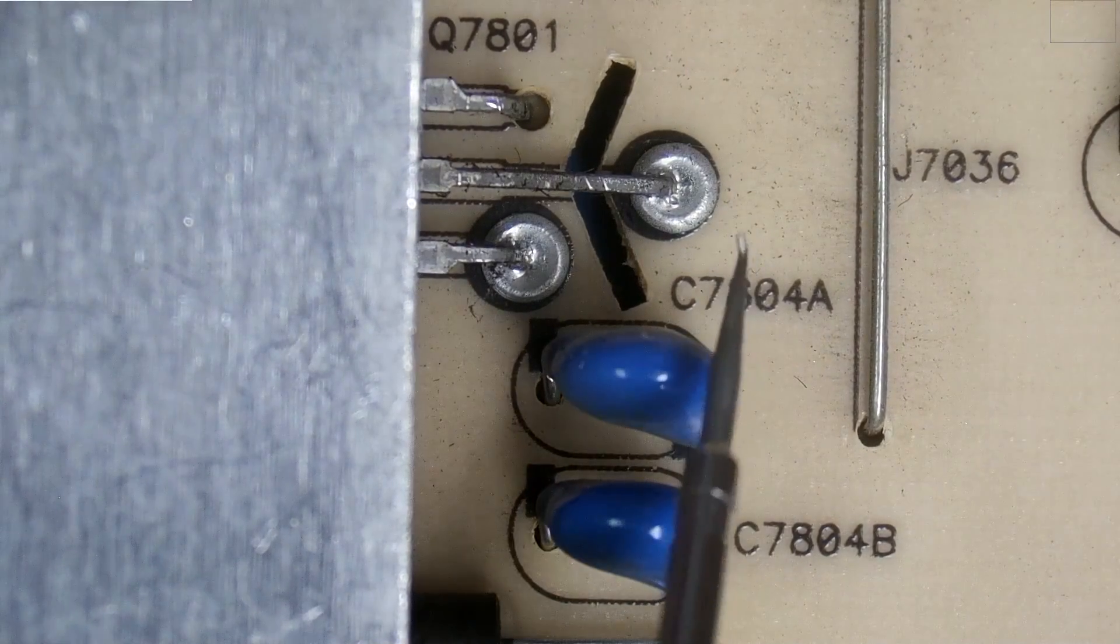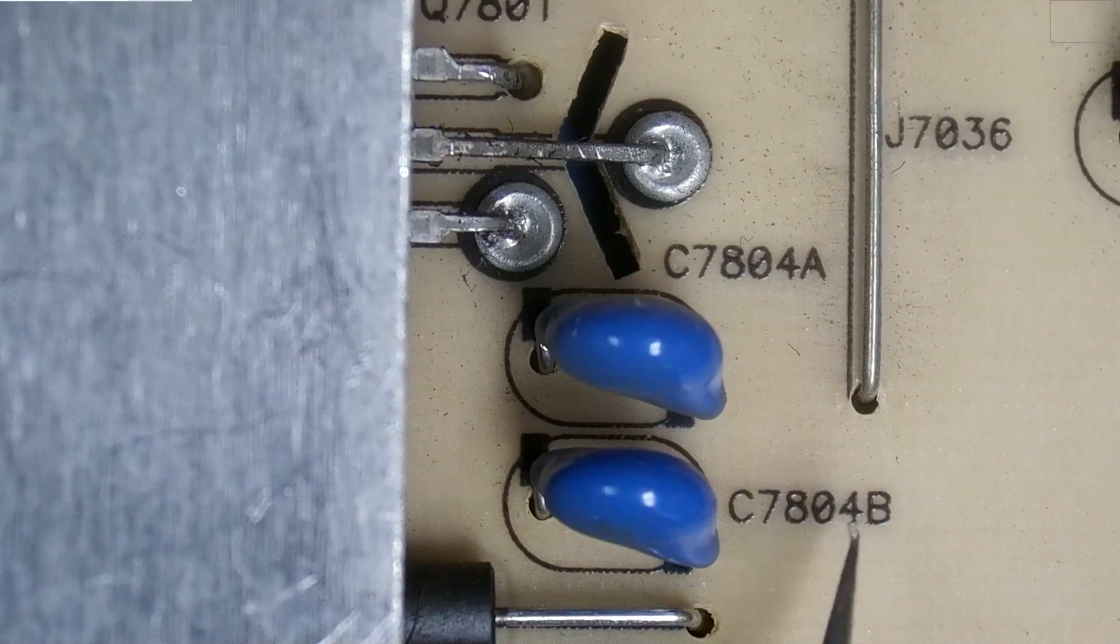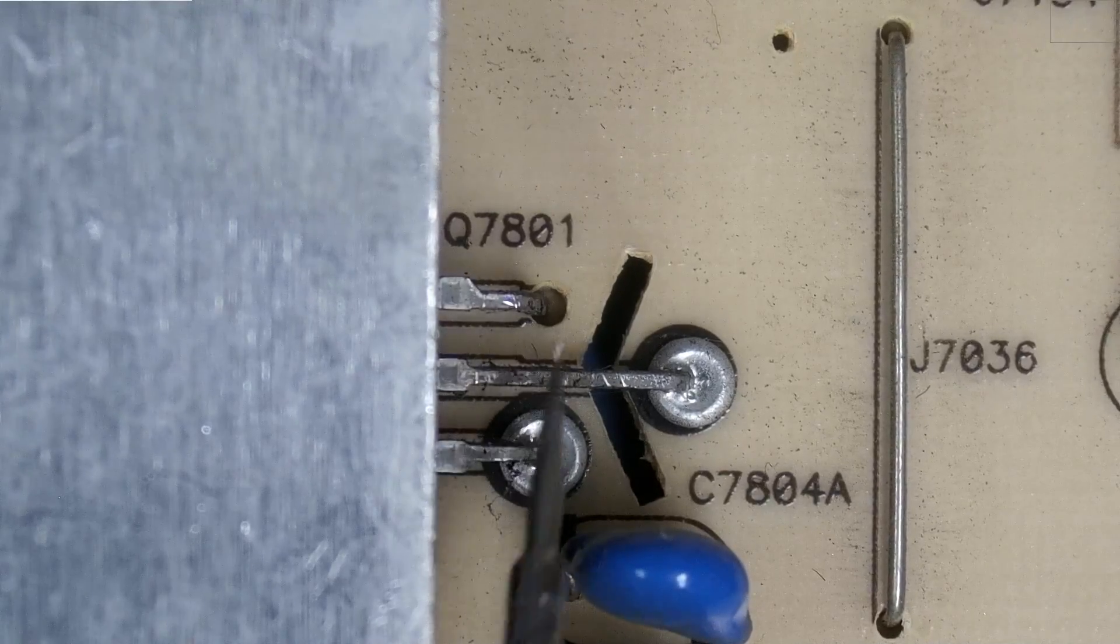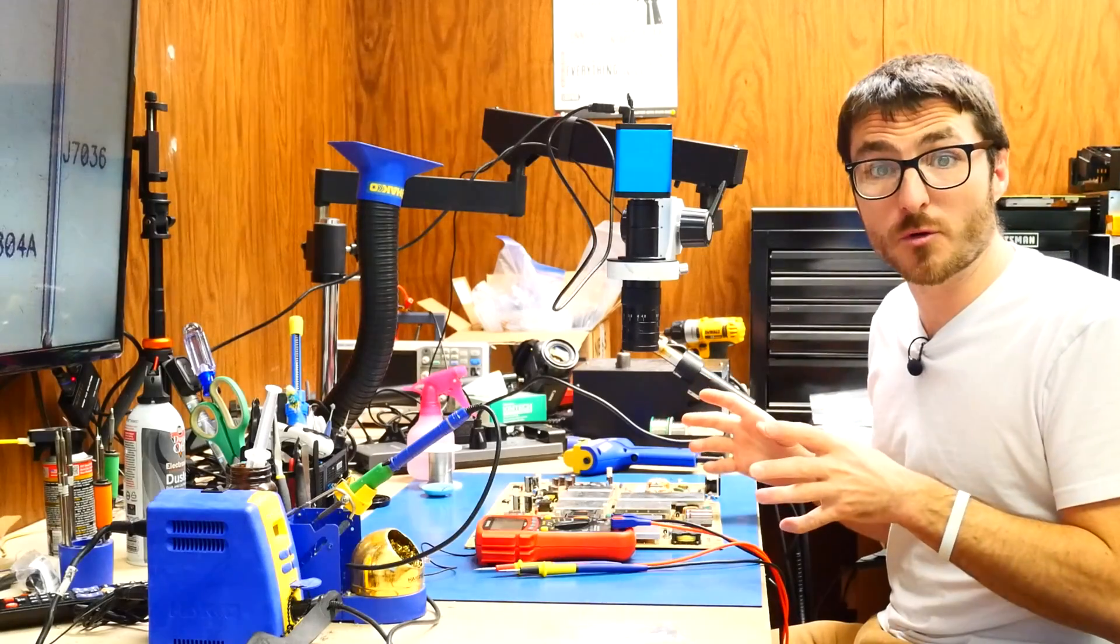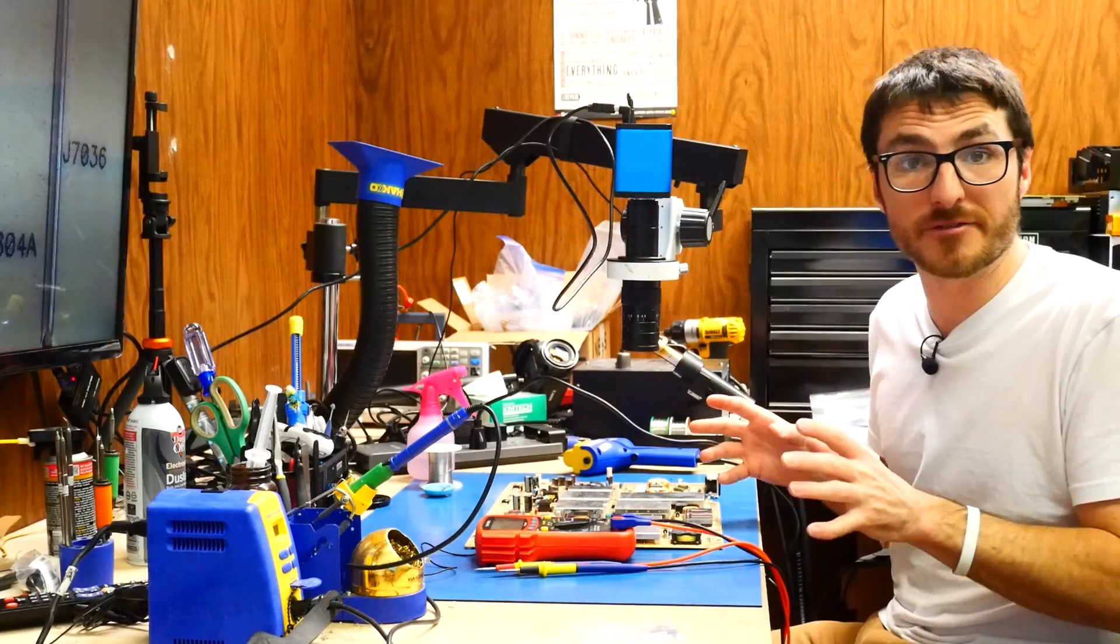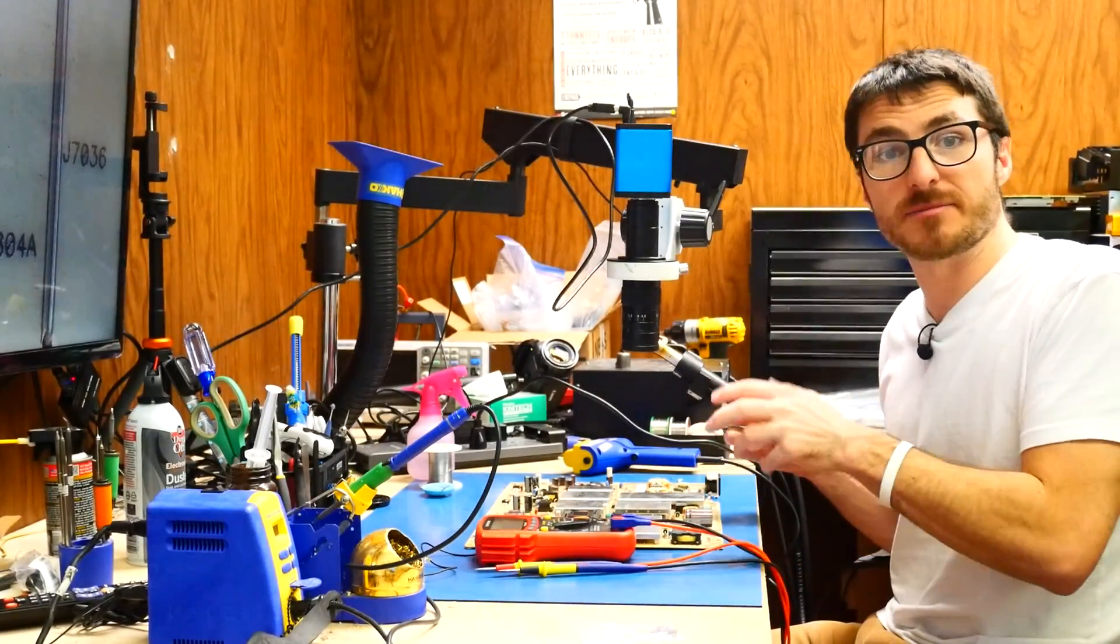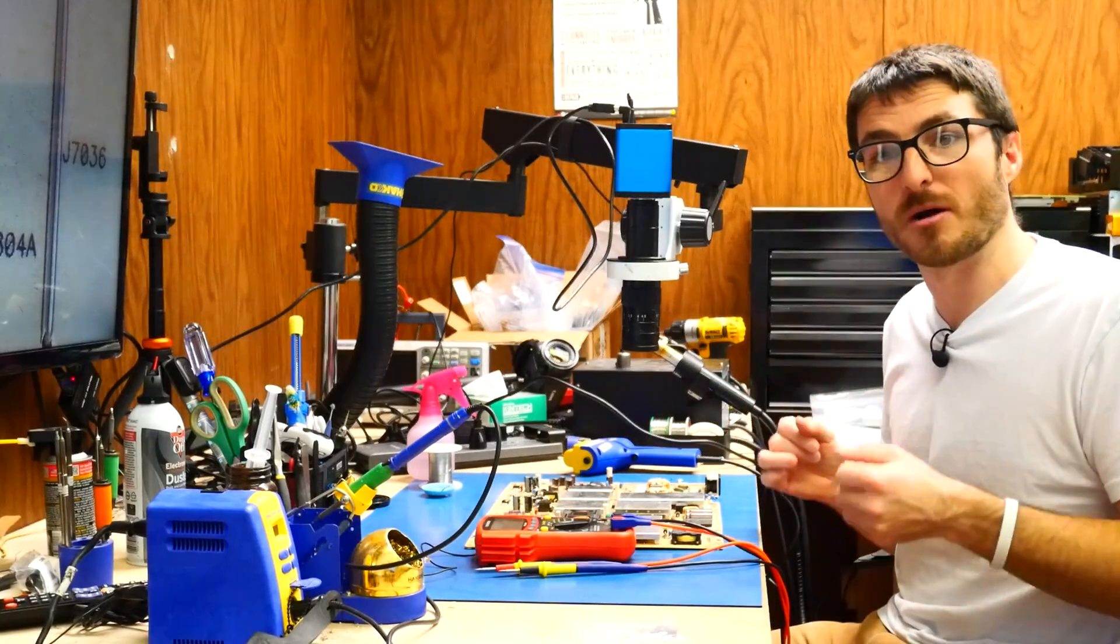Same with this one, C7804A and C804B. These two capacitors also can get damaged when this transistor shorts out, which it did. So even though we're not seeing any physical damage on any of these capacitors, we are going to want to replace all six of them just in case there is some damage that we're not able to detect at this moment.